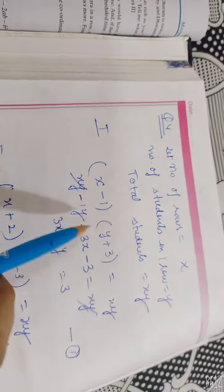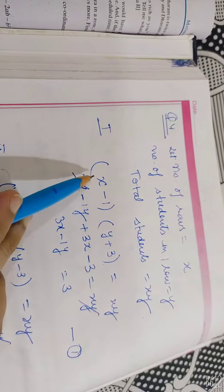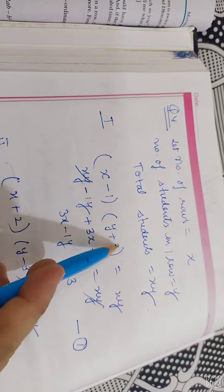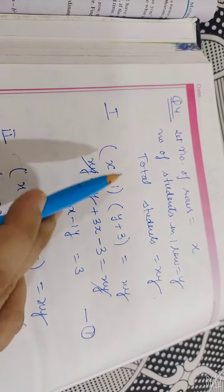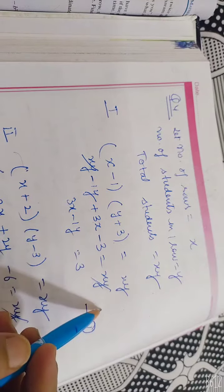Then xy has answered. Now he said that if students in a row are 3 extra in a row, then 1 row is less than a row, x minus 1. And multiply both the students and number of row is xy. I will open this bracket: xy minus y plus 3x minus 3 is equal to xy.